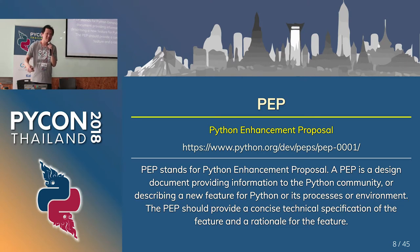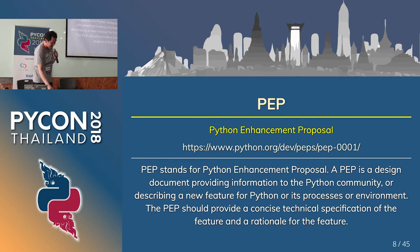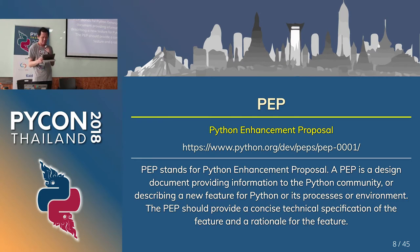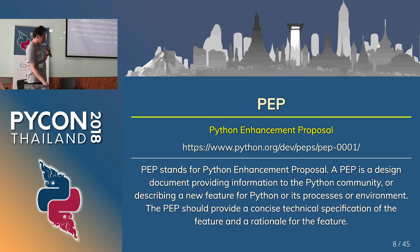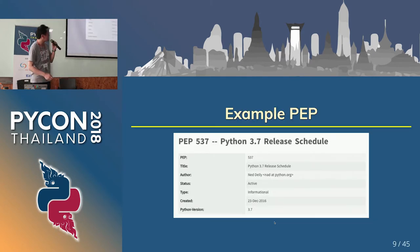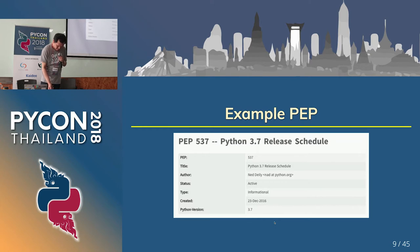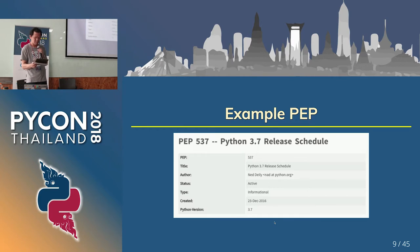By the way, do you know PEP? PEP stands for Python Enhancement Proposal. PEP is a design document providing information to the Python community, or describing a new feature for Python, or its processes or environment. For example, this example is the Python 3.7 release schedule on PEP. Every release has a PEP number, and almost all new features have PEP numbers.